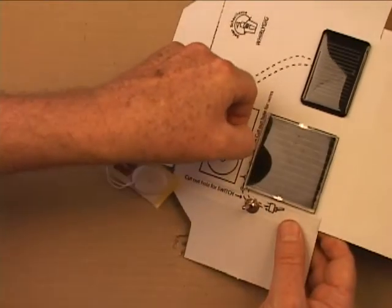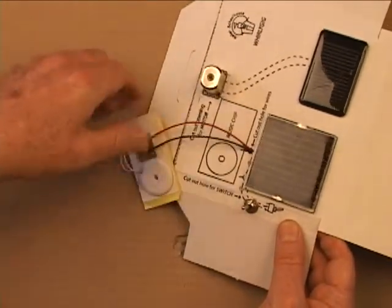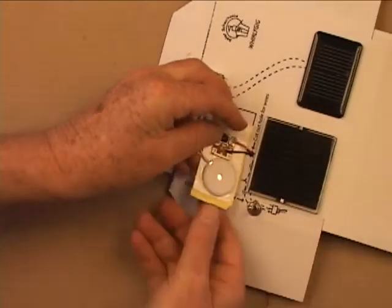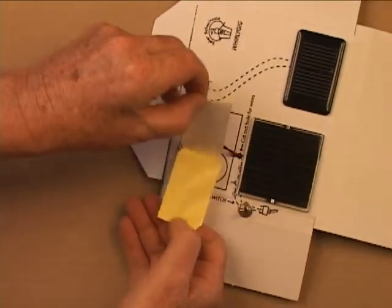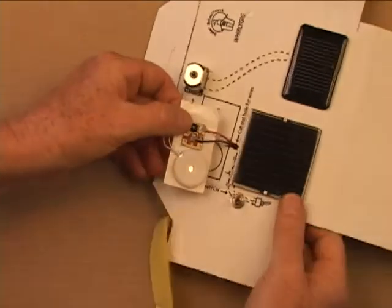Next, insert the ends of the music chip wires through the hole above the glass solar cell. Peel the backing off the chip and press it in place within its outline.